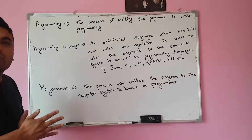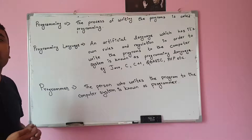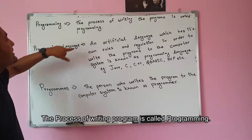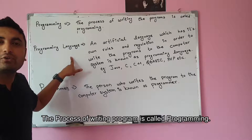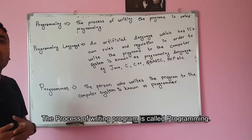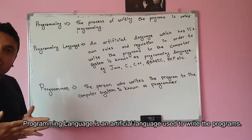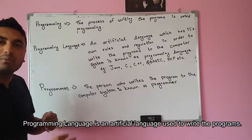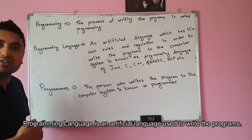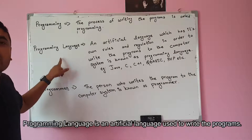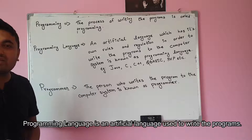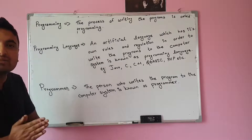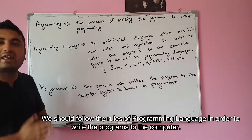The process of writing the programs is programming. If you want to work the process of programming, then you have to use a programming language to communicate with the computer. Just as I am using English language to communicate with you, to communicate with each other we use a language — so same like that, if you want to make the computer do something for us, we need a language. So that language is known as programming language. Programming language is an artificial language that is used to write programs to the computer system.